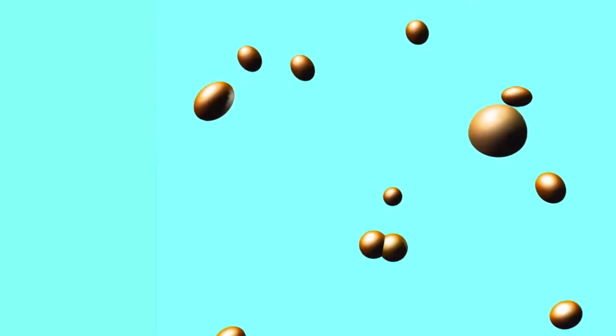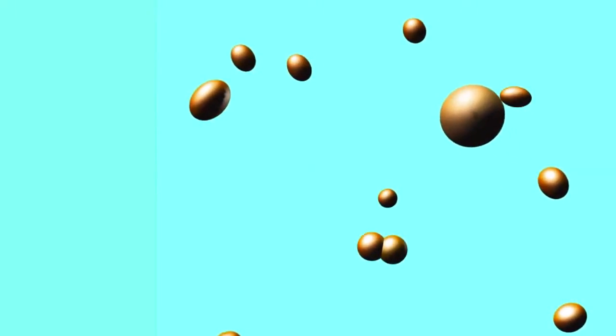These vesicles can accumulate organic molecules inside themselves, they can increase in size, and they can even split once they reach a certain size.